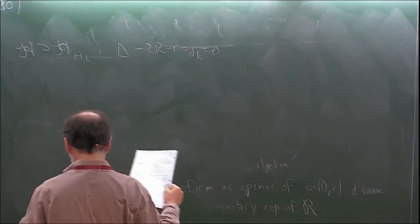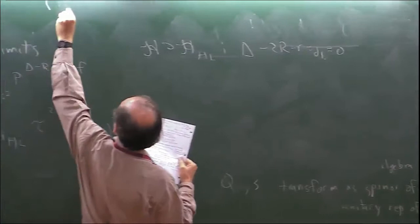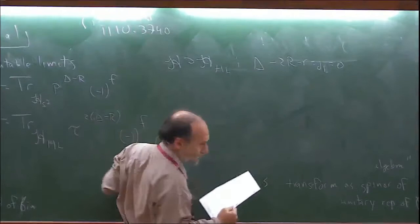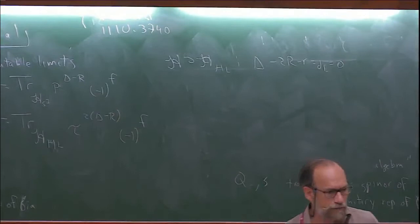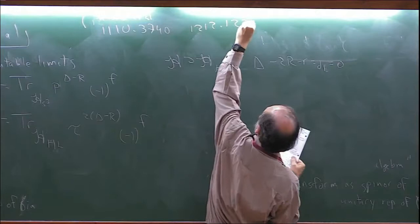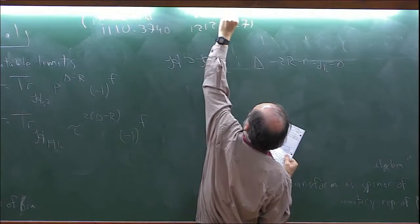You can further refine this if you have flavor symmetries, computing a character-valued index where you're looking at characters of the flavor symmetry algebra. The formula for that refined index is given by an incredibly beautiful expression. References: arXiv:1103.3740 by Gadde et al. — Abhijit will be here next week, so any questions you can just ask him — and arXiv:1212.1271 by Lemos et al.